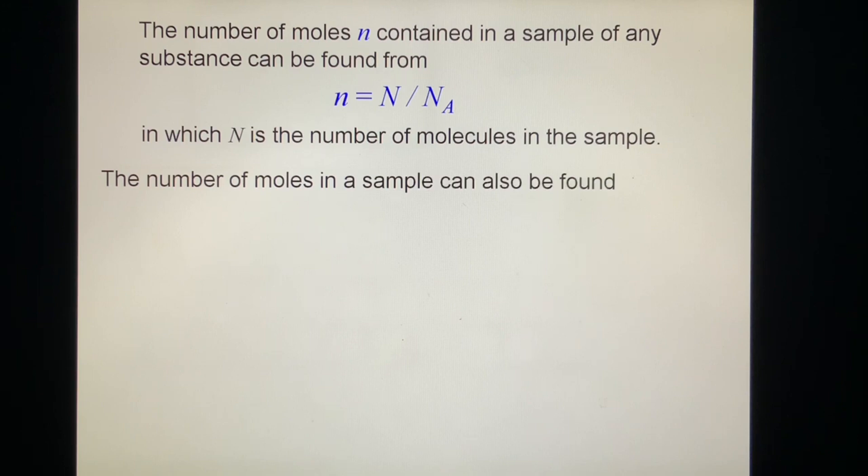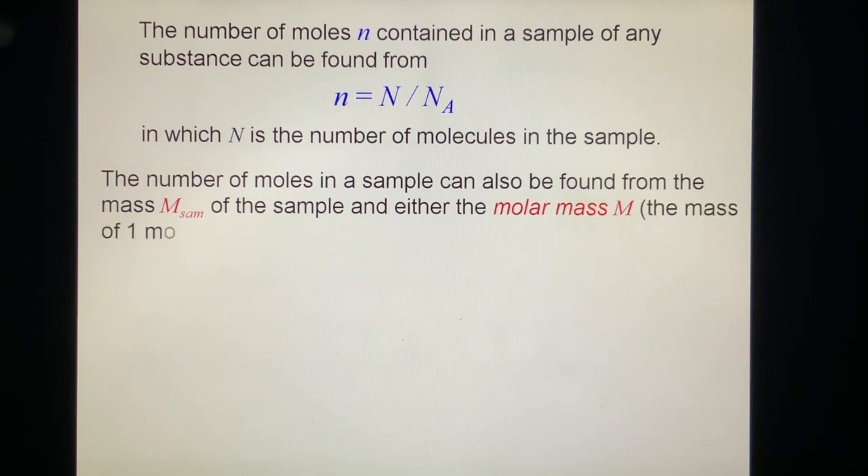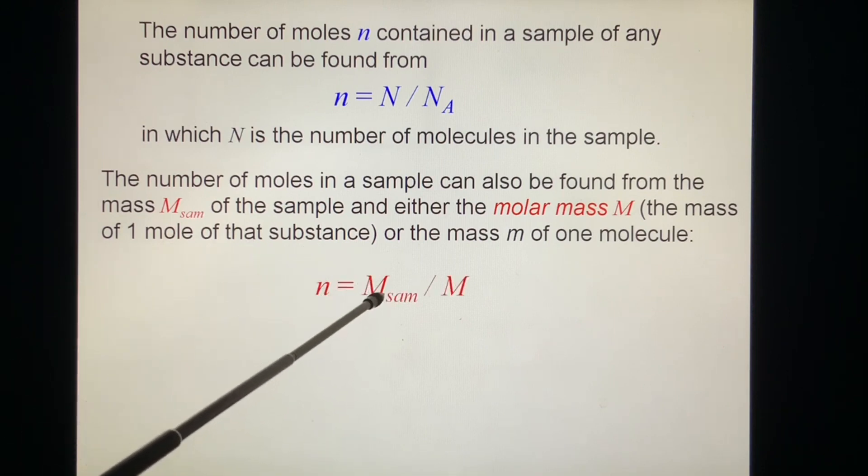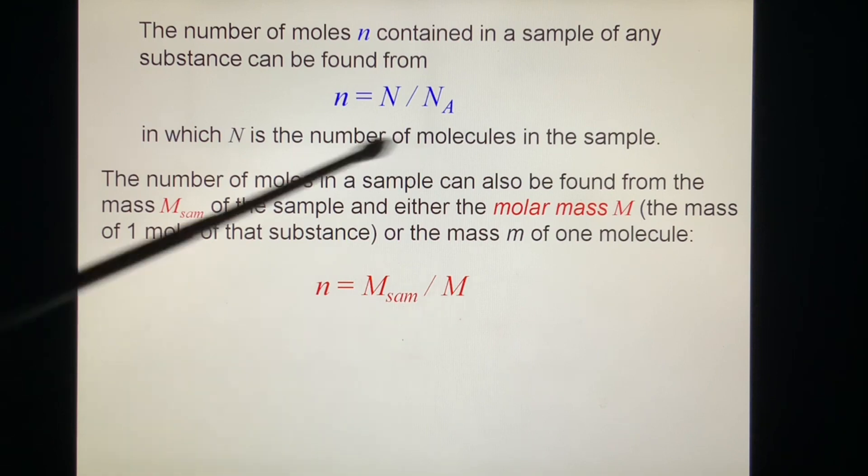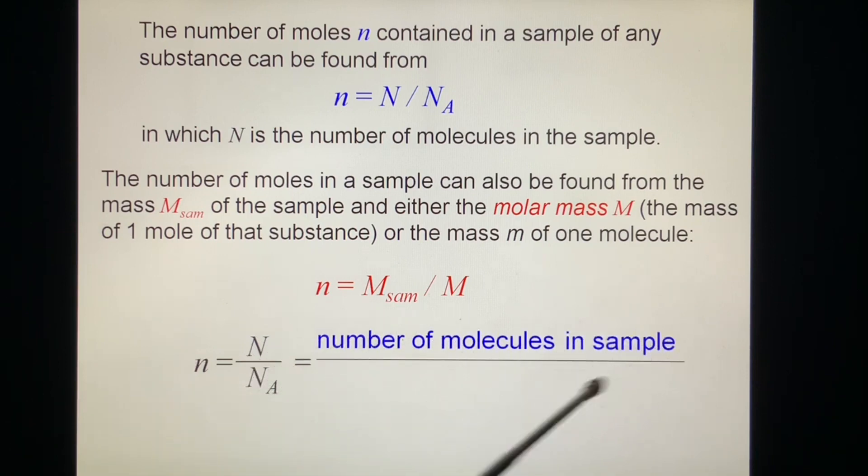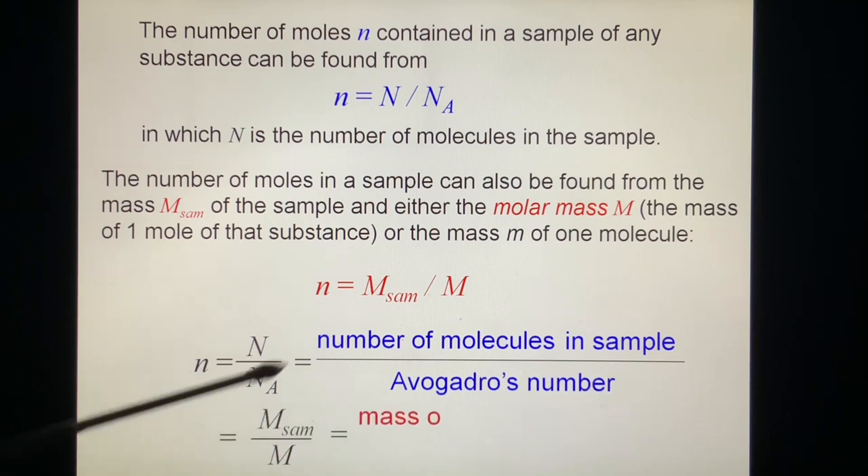The number of molecules in the sample can also be found from the mass M of the sample, and either the molar mass M, the mass of one mole of that substance, or the mass m of one molecule. n equals the mass of sample divided by molar mass M. In summary, n equals the number of molecules in the sample divided by Avogadro's number, or equals the mass of the sample divided by molar mass of this substance.